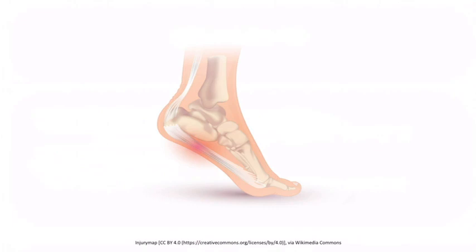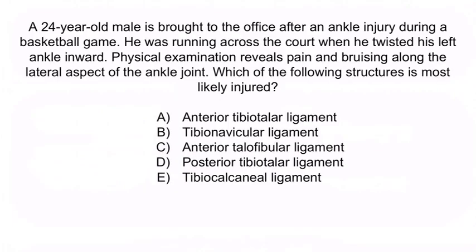Okay, let's do a question. A 24-year-old male is brought to the office after an ankle injury during a basketball game. He was running across the court when he twisted his left ankle inward. Physical examination reveals pain and bruising along the lateral aspect of the ankle joint. Which of the following structures is most likely injured?